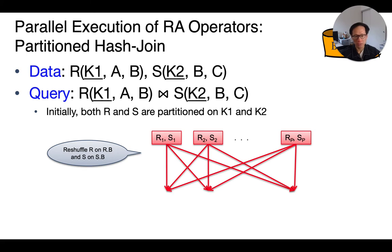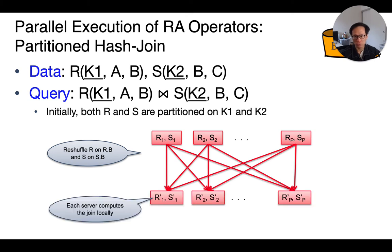And again, we use the hash function's output to determine which machine to shuffle the tuple to. After this shuffling is done, we will end up with tuples with the same value of B from R and S on the same machine. And once that happens, we simply ask each machine to compute their joins locally using any of our favorite single-node join algorithms, and we just combine all the outputs at the end.